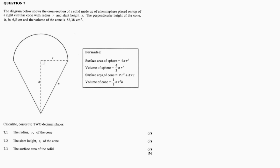Basically we have a formula reference box — surface area of a sphere, volume of a sphere, surface area of a cone, volume of a cone. Now calculate correct to two decimal places.